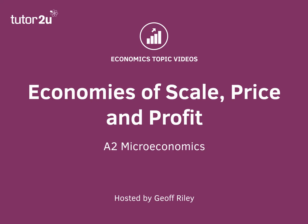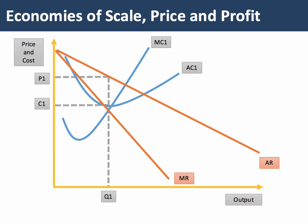Hi there. Here's a diagram short looking at economies of scale and the impact on a firm's price and profit. Economies of scale are the gains in terms of lower long-term unit costs as a result of a business expanding the scale of production internally, and as a result firms can achieve lower costs operating at a bigger scale of output.